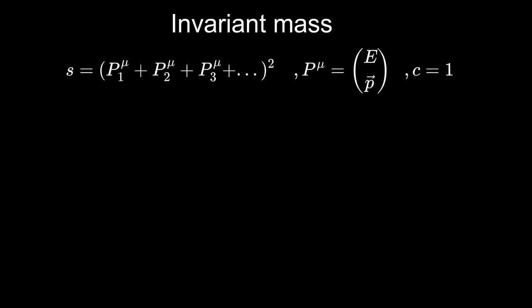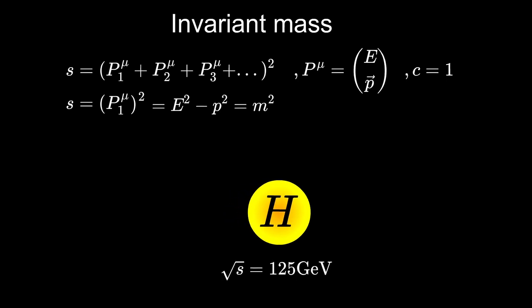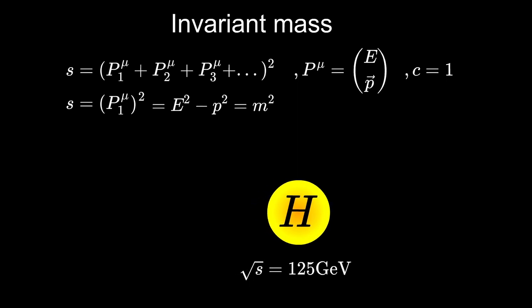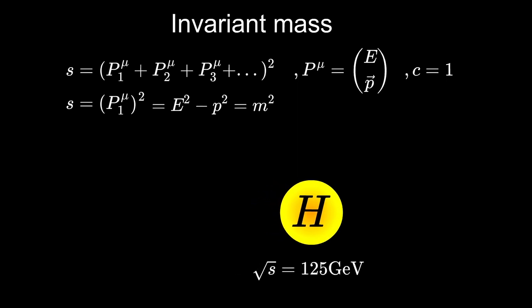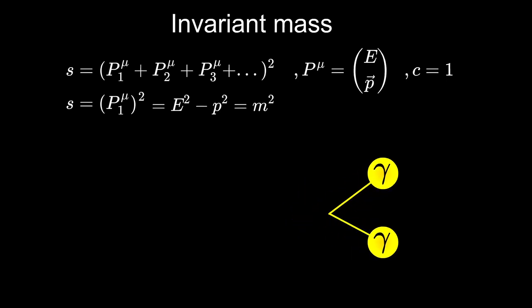The definition of this quantity is just simply squared sum of the particles four momenta. If you have just a single particle, then its invariant mass is just its own rest mass. This is also true even if the particle is moving relative to us. Because the total energy and momentum exactly compensate to the same number of 125 GeV.